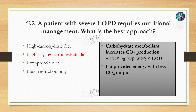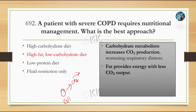Carbohydrate metabolism produces more CO2, which may worsen respiratory distress. As shown in the diagram explained before, COPD patients should restrict carbohydrates because their metabolism produces more carbon dioxide. If the patient already has compromised lungs, increased carbon dioxide leads to worsening conditions. Fat provides energy with less carbon dioxide output — hence high fat, low carb diet for COPD patients.